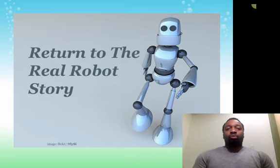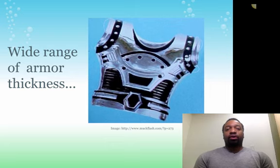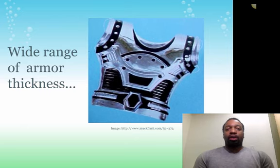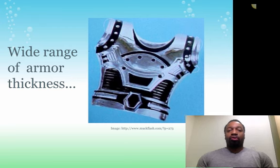Now let's go back to our robot story that we used to talk about evolution and natural selection, and think through a couple of scenarios. In the first scenario, let's say that armor thickness is inherited — passed down from robot to robot — and there's a wide range of armor thickness: some with great thickness, some with very little, and some in the middle.